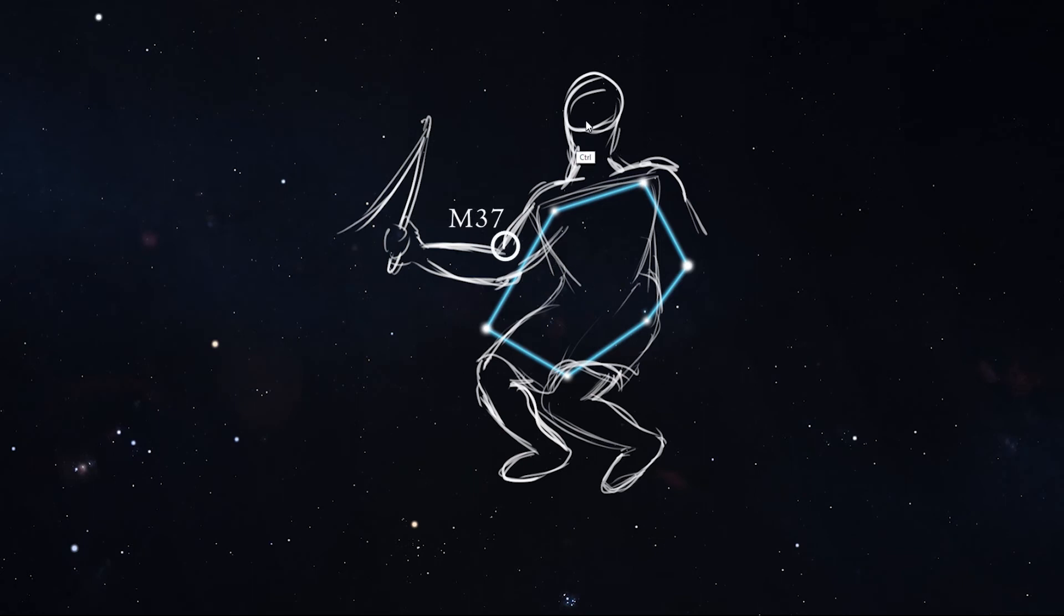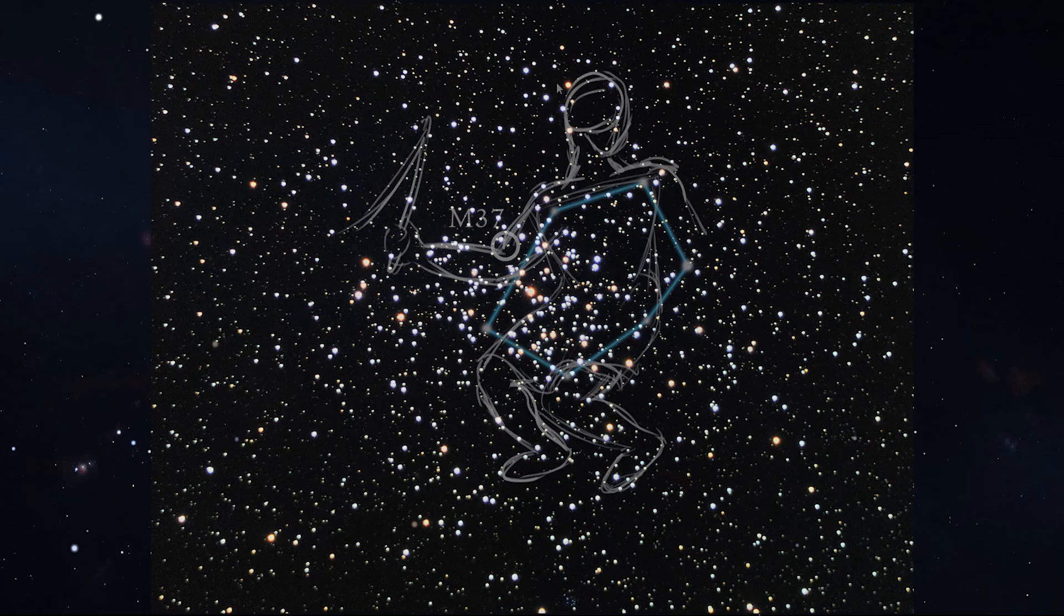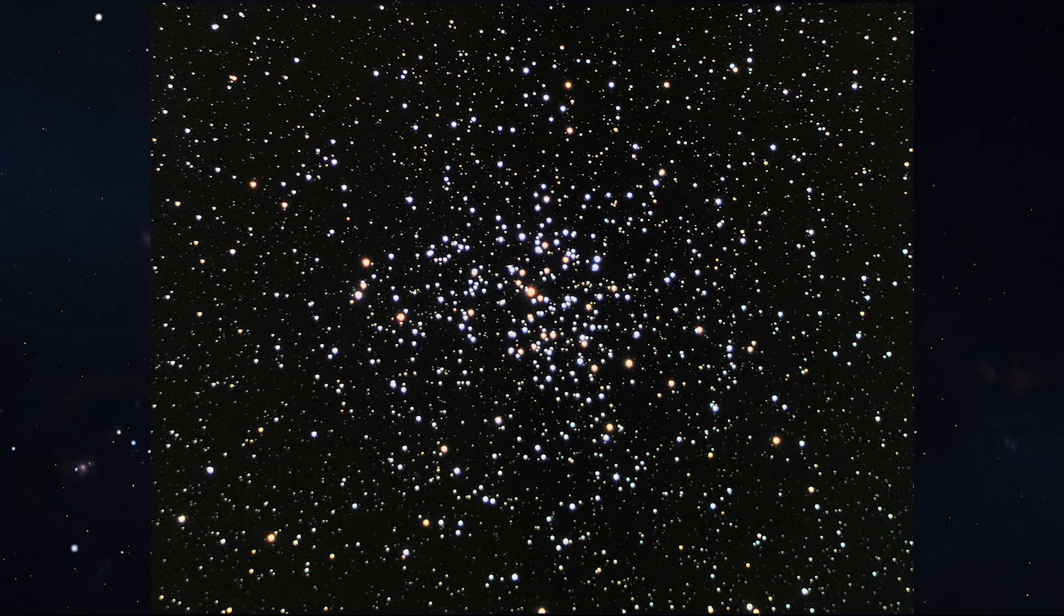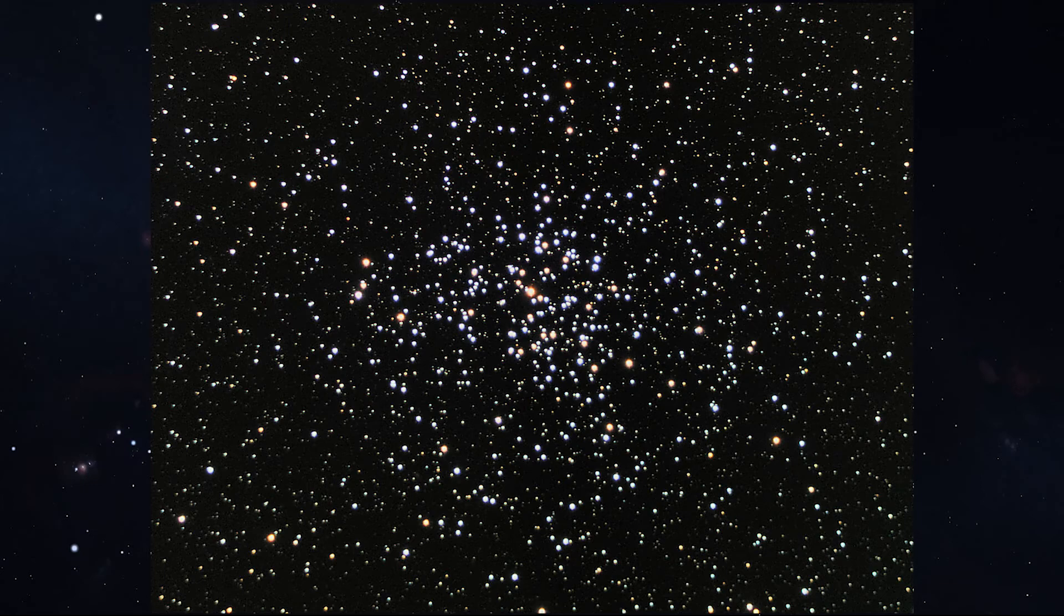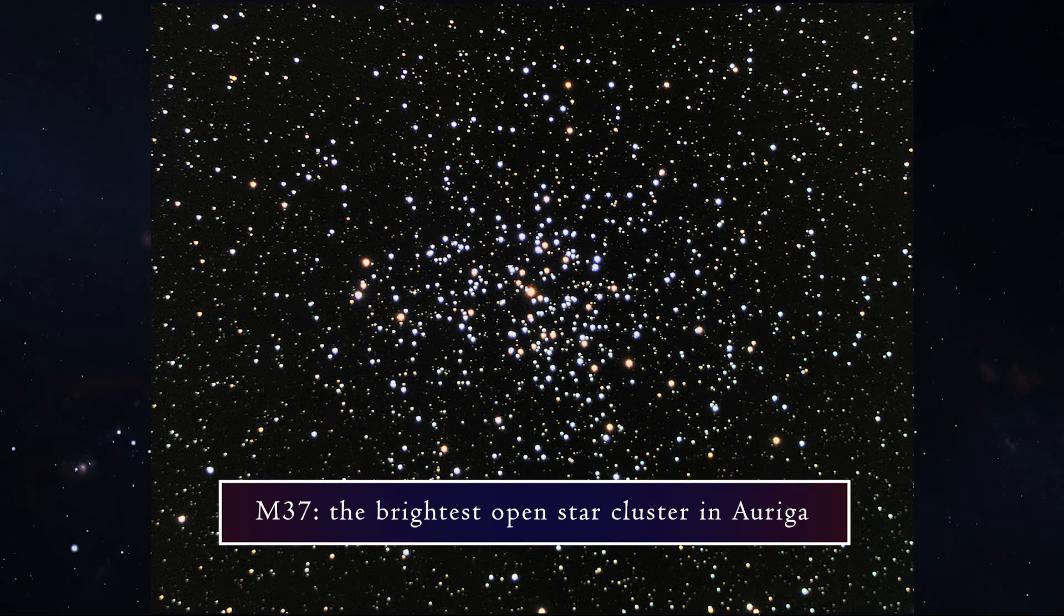M37 is the farthest of the three, at a distance of about 42,000 light years away. However, since it is home to so many stars, 150 actually, M37 is also the brightest open star cluster in Auriga, with an apparent magnitude of 5.6.